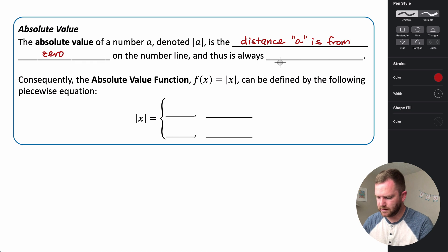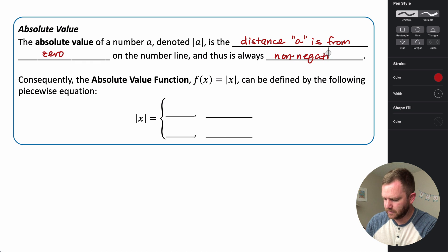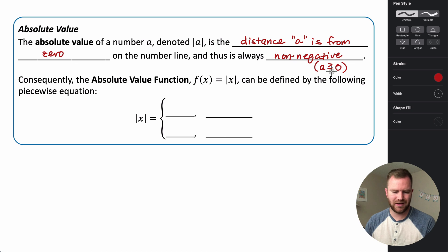Because absolute value represents a distance, it is always non-negative. It's not quite precise to say it's always positive because A could be greater than or equal to zero. Since zero is neither positive nor negative, we say that absolute value is non-negative.